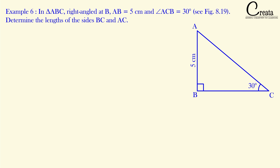Let's observe the question. In this, a triangle ABC is given which is right angled at angle B and angle C is given as 30 degrees. The side AB is given as 5 centimeters and we have to find the length of sides BC and AC. So let's approach this question. Here angle C is given as 30 degrees, which we will take as the trigonometric angle — that is our first step. We now move to the second step: identifying the trigonometric sides, which are perpendicular, hypotenuse, and base.